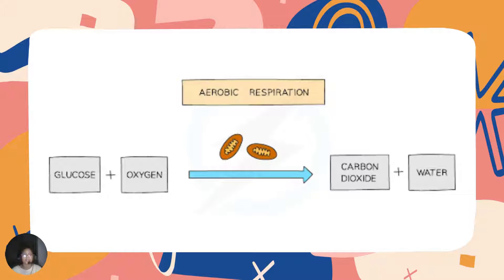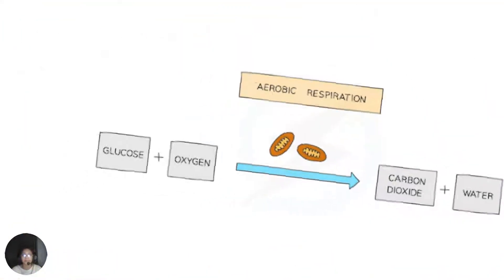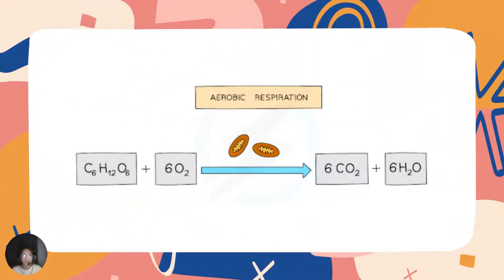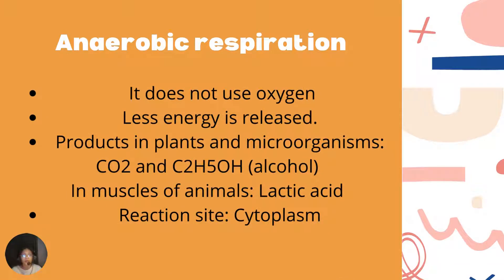What is ATP? ATP is adenosine triphosphate, and it is known as the universal energy currency. It can be stored in all living cells as stored energy. Whenever our body requires any sort of energy, this ATP can be hydrolyzed by the activity of enzymes and energy can be released, and this energy can be used in different living processes of the body. So aerobic respiration releases 32 ATPs. This chemical equation is very important.